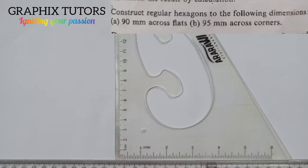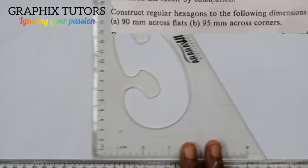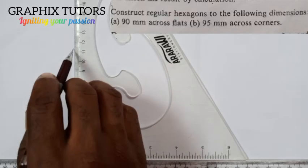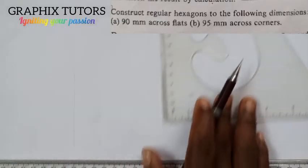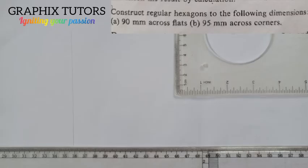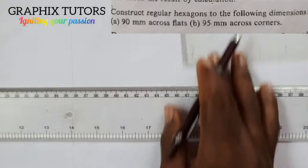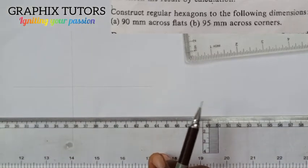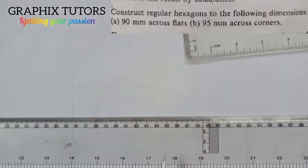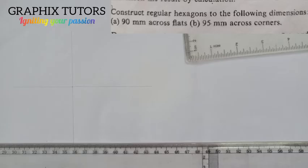The main aim of this video is to show you the difference between across flat and across corner. Since the first one says 90 millimeters across flat, what you do is take your set square, remove it, draw your vertical line, and draw your horizontal line. The reason for this is to get the center of your circle. We are told to draw 90 millimeters across flat, so you take half of it, which is 45.